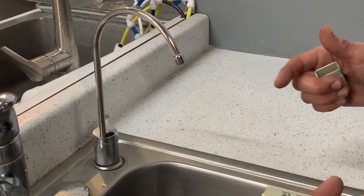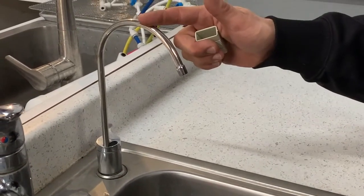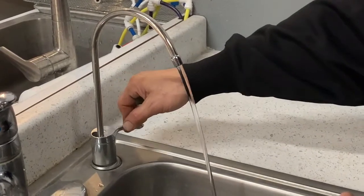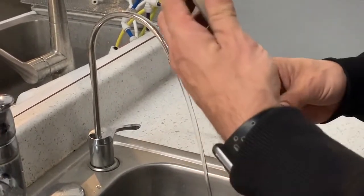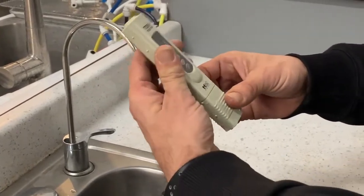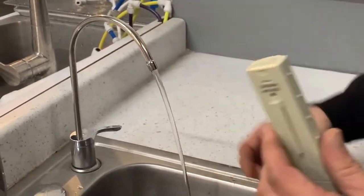The third location we want to test is your actual RO spigot. You're just literally going to turn that on, let it run and test. Get your readings. Do that five times.